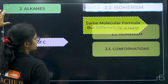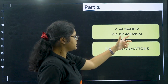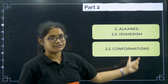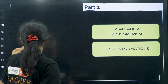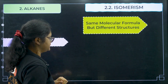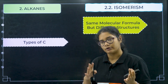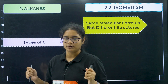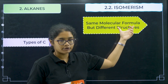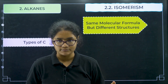In today's class we are going to discuss isomerism in alkanes and conformations of alkanes. Coming to isomerism — we have already discussed this in the organic chemistry chapter also. Isomerism means same molecular formula but different structures.